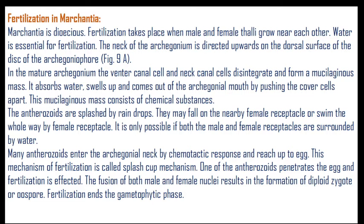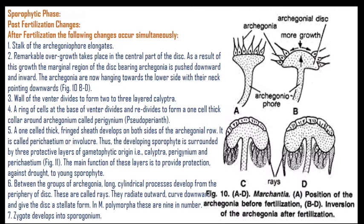One antherozoid penetrates the egg and fertilization is effected. The fusion of male and female nuclei results in the formation of a diploid zygote, called the oospore. This ends the gametophytic phase and marks the beginning of the sporophytic phase.